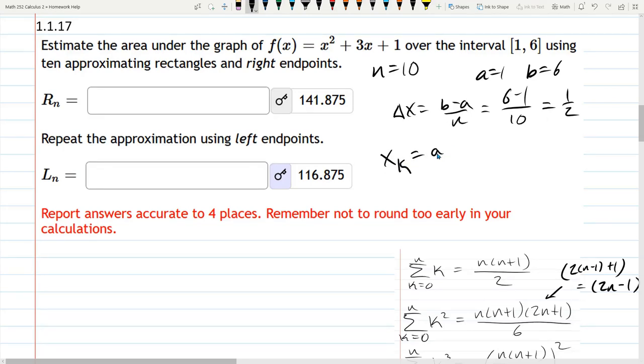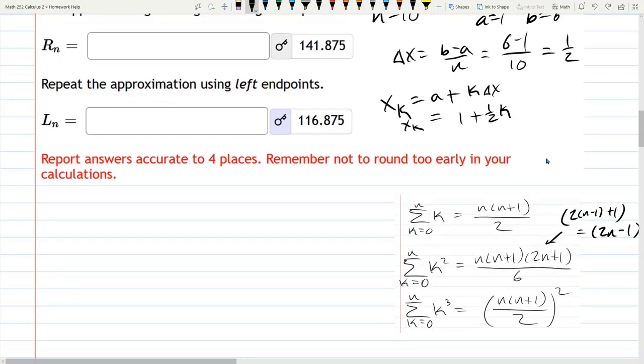XK is A plus K times delta X. XK is 1 plus 1 half K. So that's XK. Your interval, my interval happened to be half as long as the number of rectangles we're cutting it into, so I got a relatively nice fraction here. You may have an uglier fraction, but the work should be just the same.